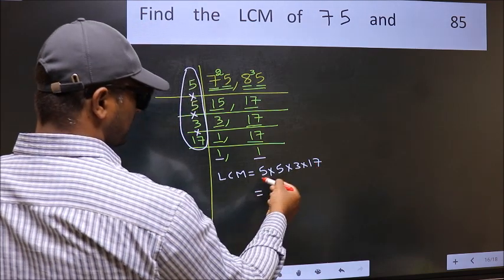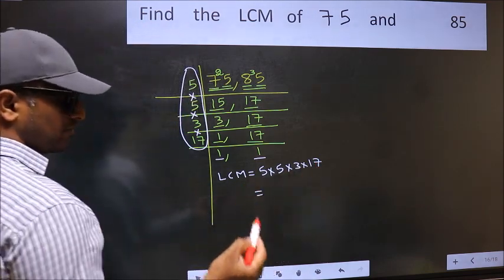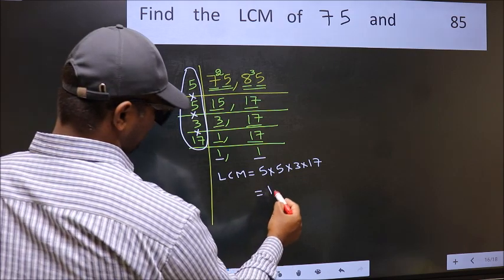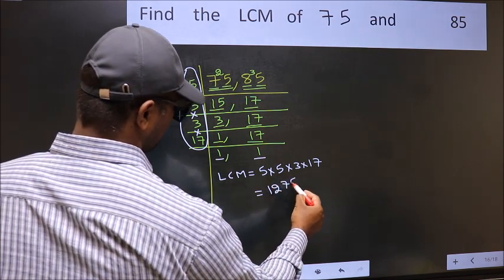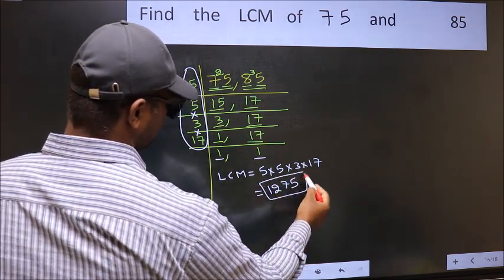When we multiply these numbers, we get 1275 is our LCM.